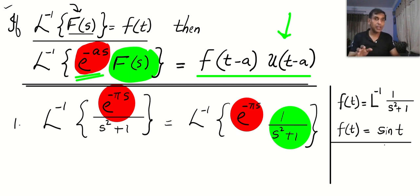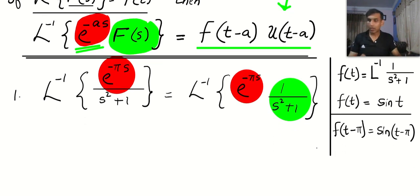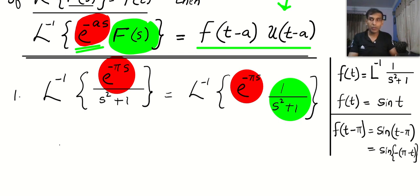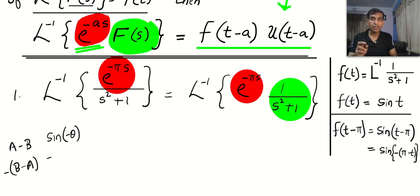In the next line, write f of t minus a. What is a here? Pi. That is sine of t minus pi — this means you replace every t with t minus pi. Now, sine(t − π): if you write a minus b as b minus a you must put a minus sign outside, and sine(−θ) equals minus sine(θ). So you end up with minus sine(π − t).